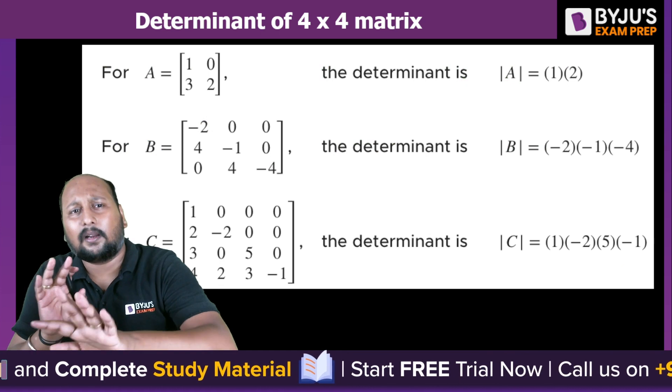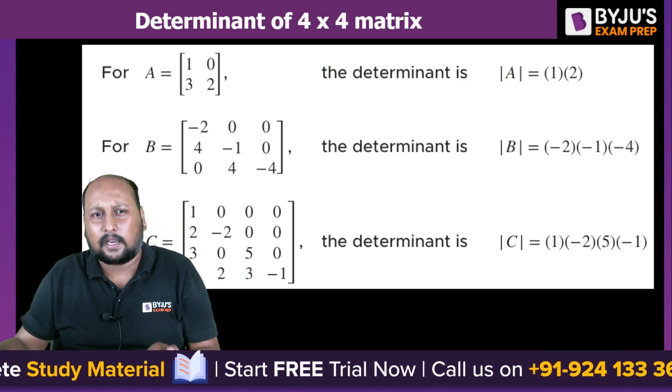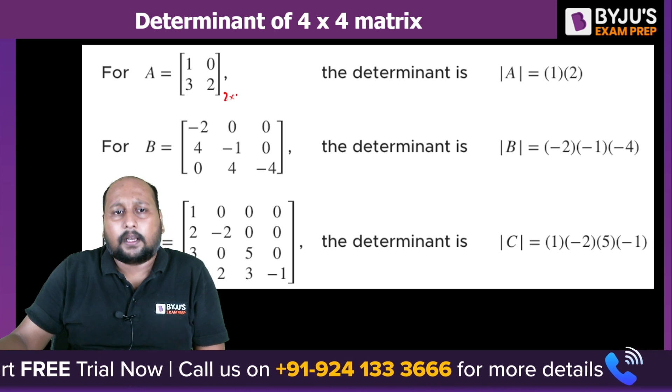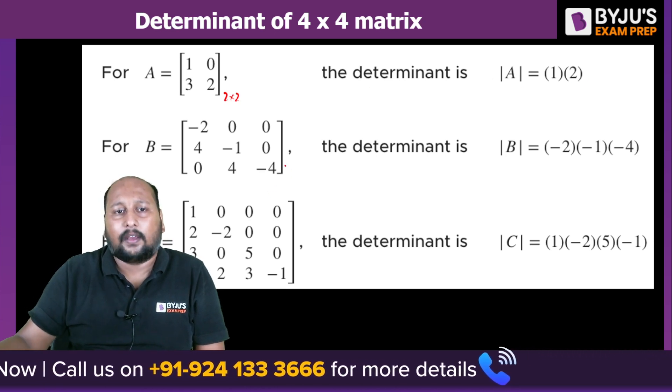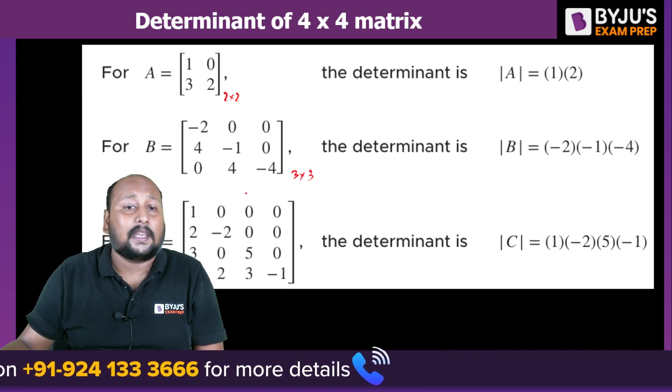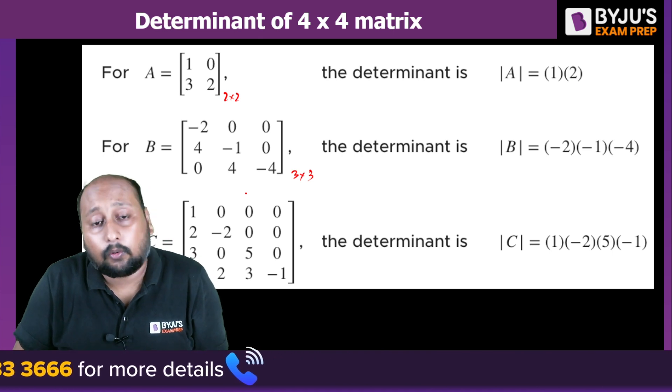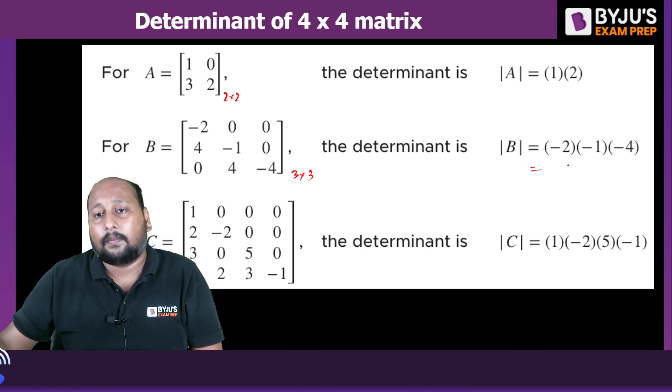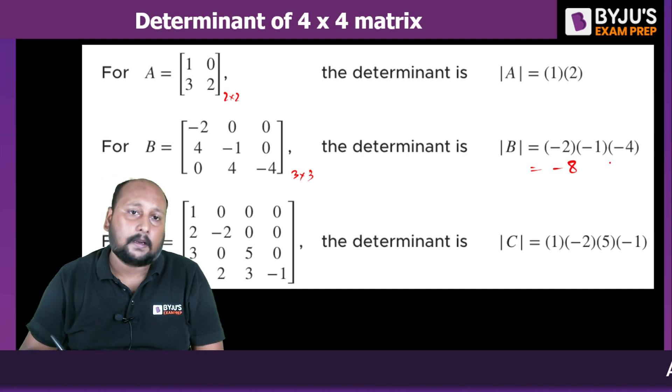It is not limited to 4 × 4, we can take any one. Like if you're having a 2 × 2 matrix, it will be 1 × 2. If you're having a 3 × 3 matrix, it is again a lower triangular matrix, so it is -2 × -1 × -4 that will be equal to -8.